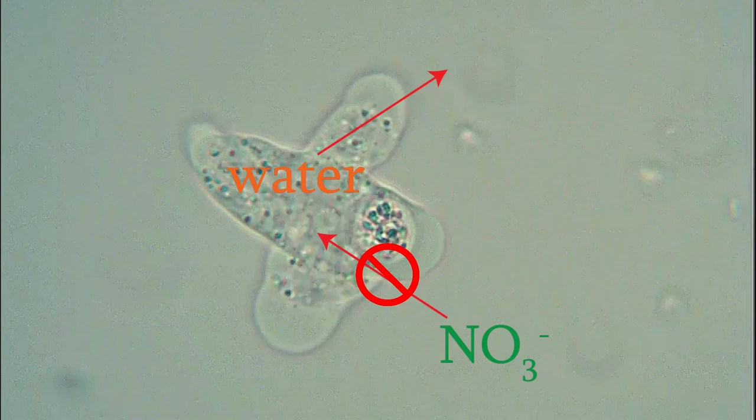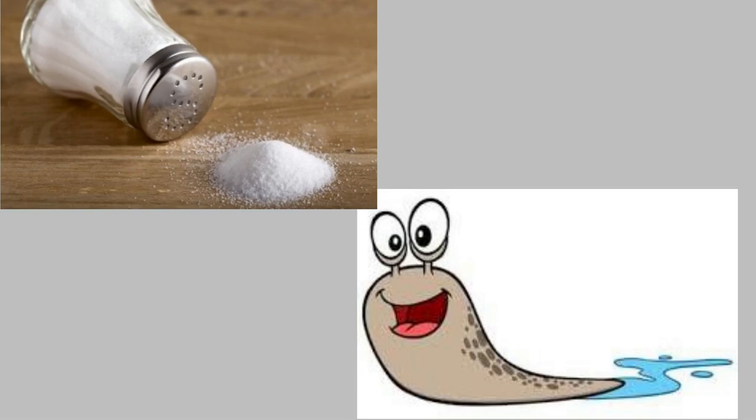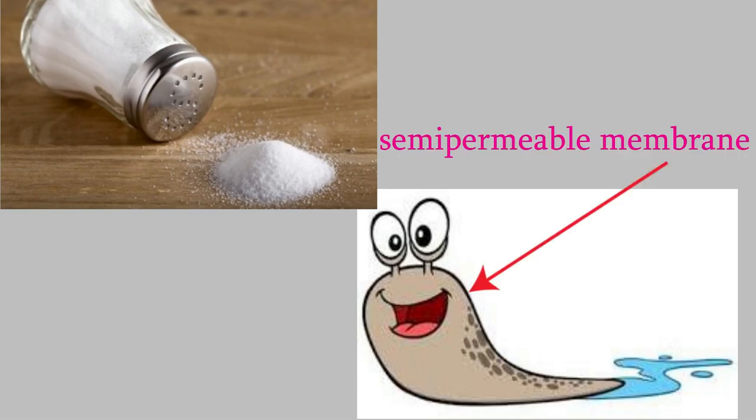Losing that water will make the amoeba shrivel and will probably kill it. That's the same thing that happens if a slug touches salt. The slug has a semipermeable membrane as a skin, so when there's a lot of salt on the outside, water comes out of the slug cells in an attempt to dilute the salt. But there's way too much salt on the outside, so essentially all the water comes out of the slug cells and that kills the slug.